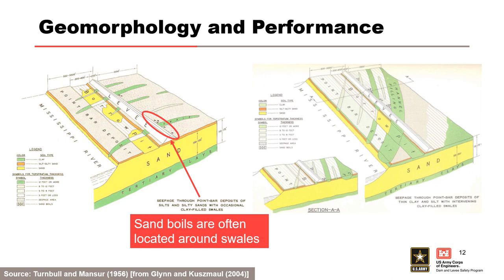Surface geology is a major factor influencing locations of backward erosion piping, especially in regard to levee alignment. Geomorphology for point bar deposits along the Mississippi River and other major waterways is particularly difficult to model accurately, where the blanket is heterogeneous and composed of clay-filled swales with sandy ridges between the swales. Ridge and swale topography in point bar deposits concentrates seepage and results in more observed sand boils. Understanding three-dimensional concentration of seepage, once a defect has formed, will also make progression to breach more likely.